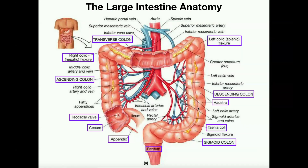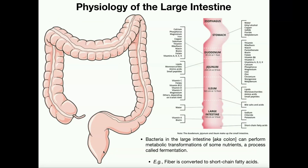Going down is the descending colon. Where the descending colon starts to curve, this region is called the sigmoid colon — 'sigmoid' means forming an S-shape. The sigmoid colon eventually becomes continuous with the last region of the large intestine called the rectum. Technically, the rectum is part of the large intestine, as mentioned in the digestive histology video.